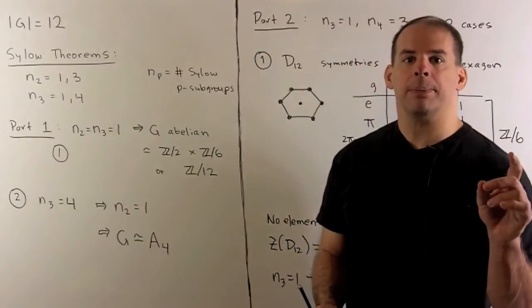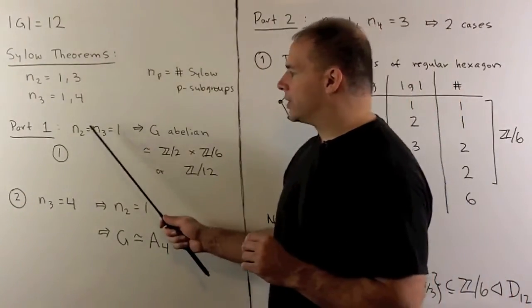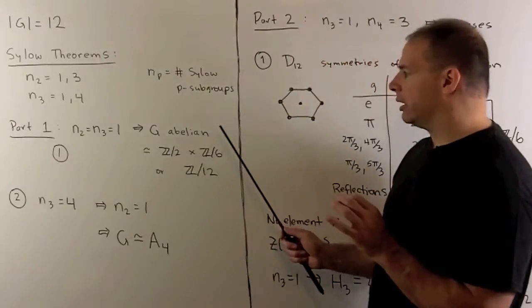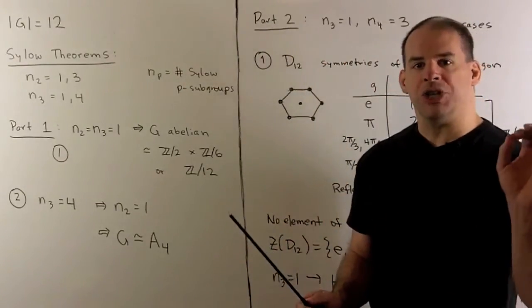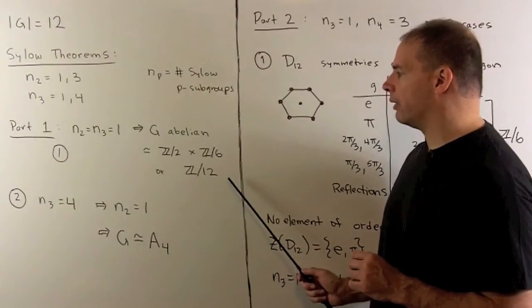In the first part, we considered several cases. When n sub 2 equals n sub 3 equals 1, we had that G is abelian, and then our G was isomorphic to either Z mod 2 cross Z mod 6 or Z mod 12.